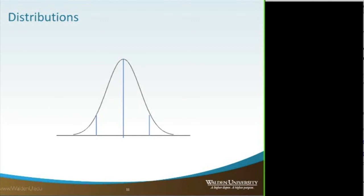Here's an example of a distribution — our typical bell-shaped curve. We have the vertical line in the middle. In a normal distribution, you can see that the mean, the median, and the mode are all the exact same number. If you didn't have a normal distribution, that's where you might have differences where you would use the median or the mode.